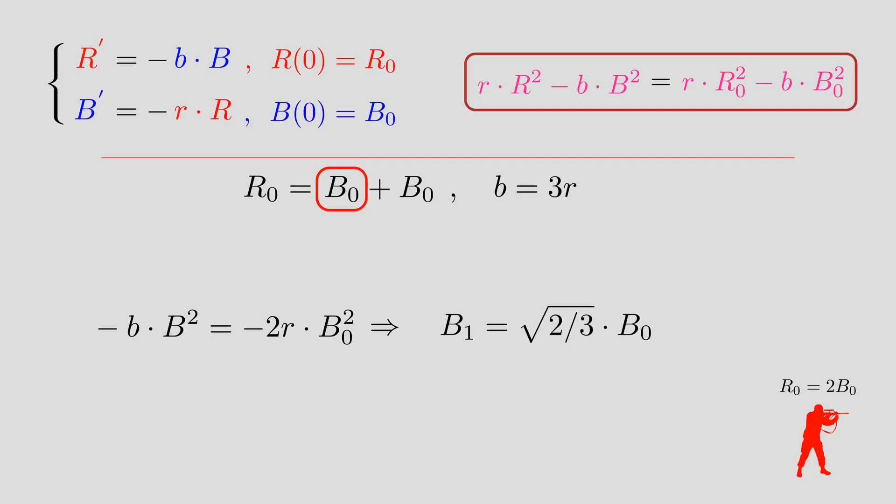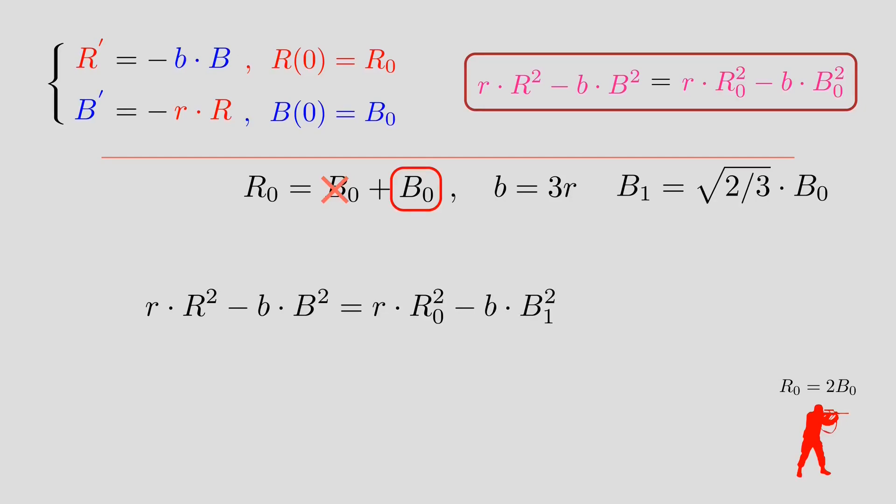In the second phase, the initial number of red army forces is B_0, which is the second half. And the initial number for the blue army is B_1, which is the remaining forces from phase one. When we redo the calculation, we see that the expression is also negative. That means R reaches zero first. So it's the red army that loses.